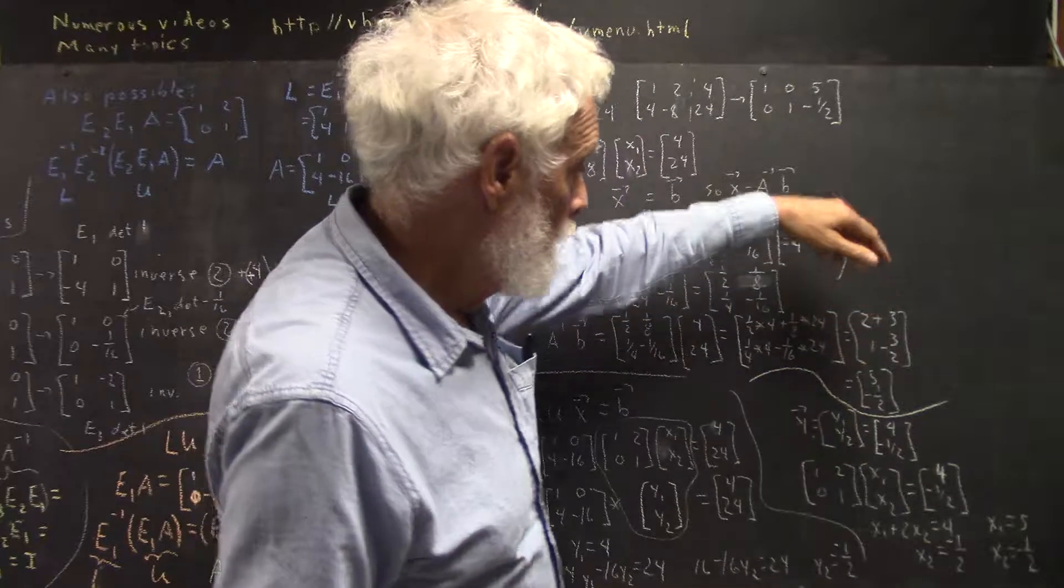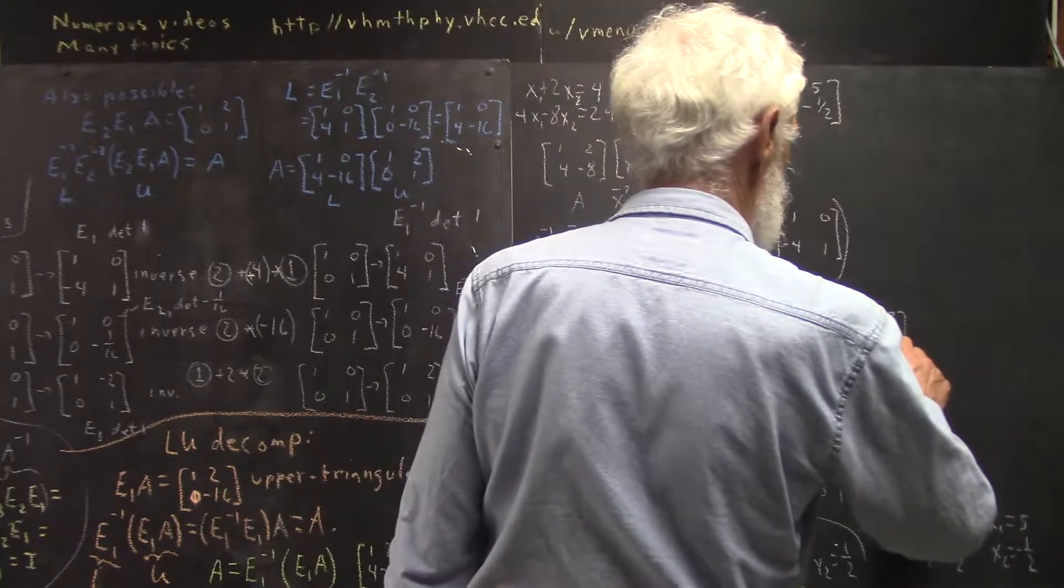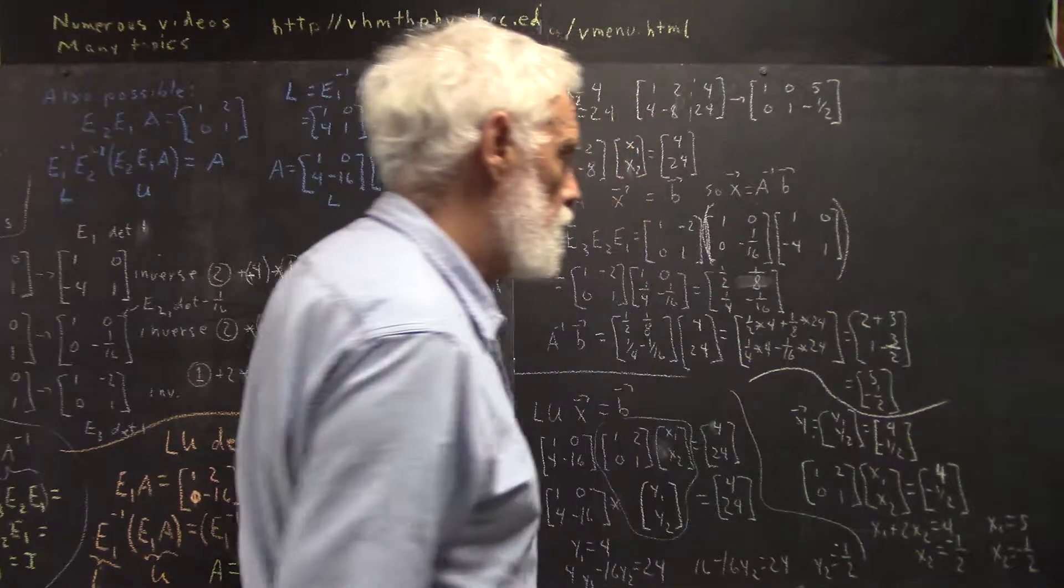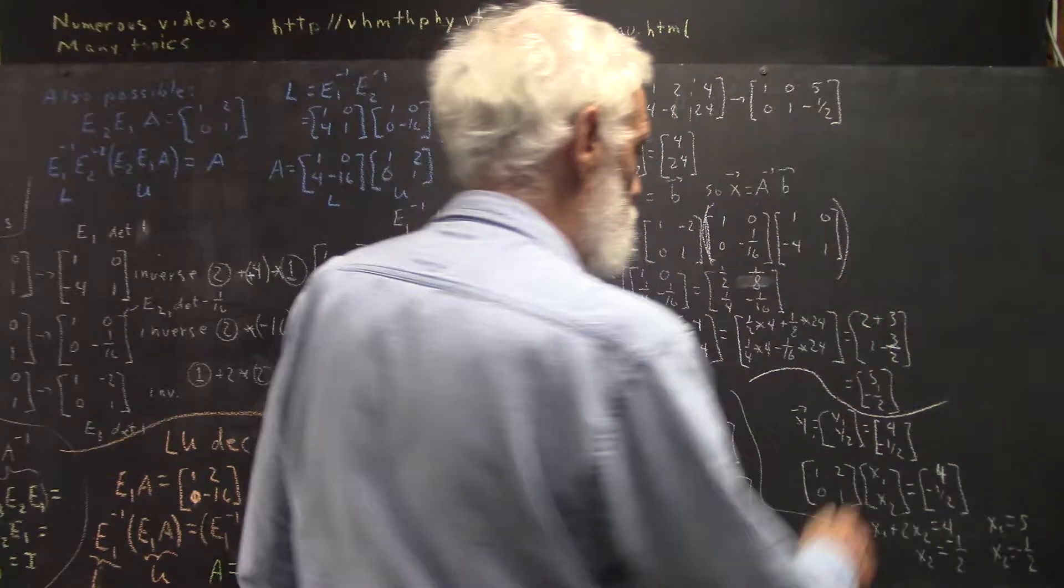We do that multiplication. We write it out carefully. 16 doesn't look much like a 16. 16, and we get 3 halves looks a little weird, too.